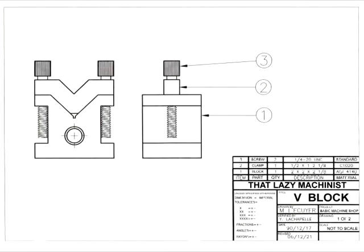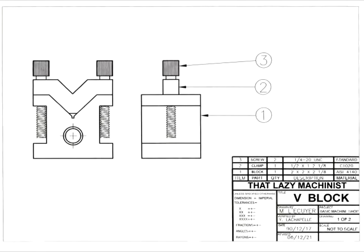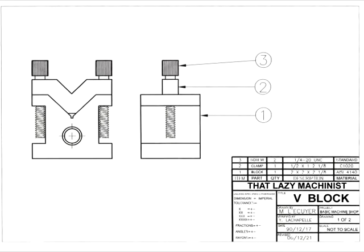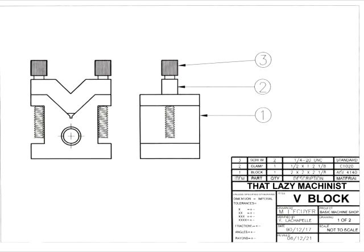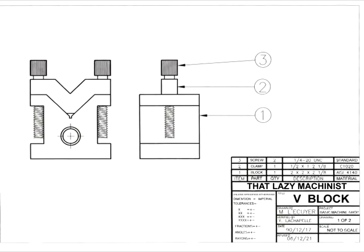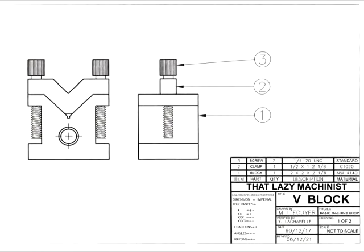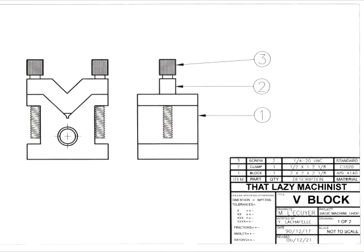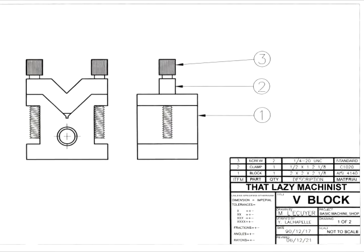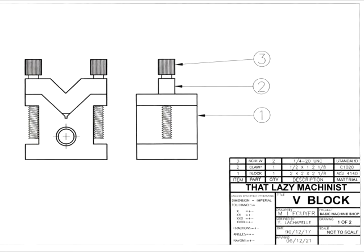To be manufacturable, a part's dimensions must be toleranced — a dimension without a tolerance cannot be attained. However, reference dimensions don't have tolerances. That's because reference dimensions are not used in the manufacturing of parts.